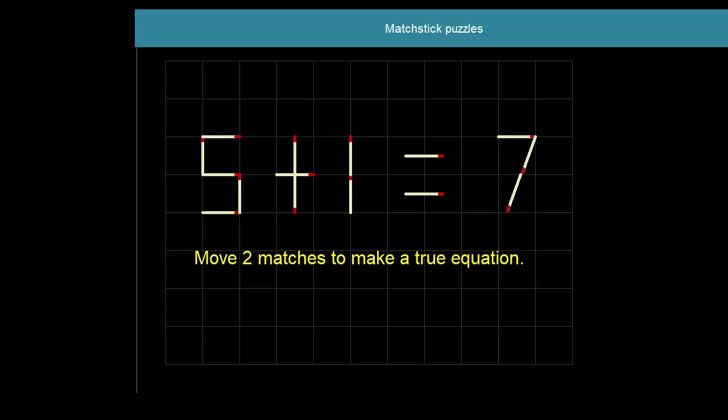This is an equation, isn't it? Well, not really true. It says five plus one equals seven, which is false. Can we move just two matches so that it becomes true? Two matches to make a true equation. Let's see.